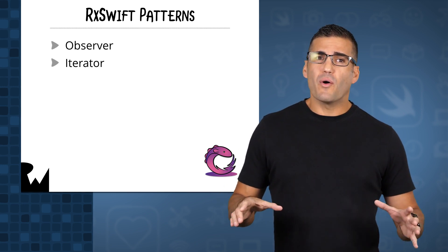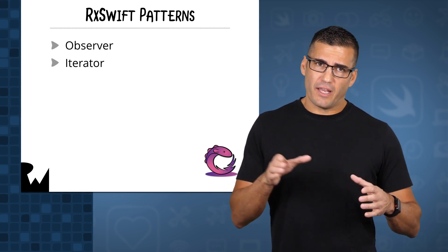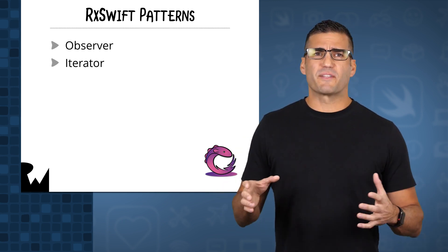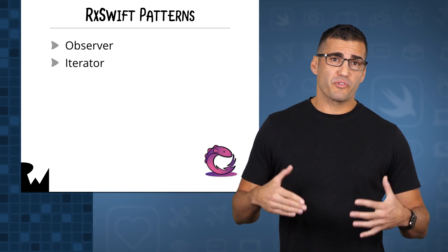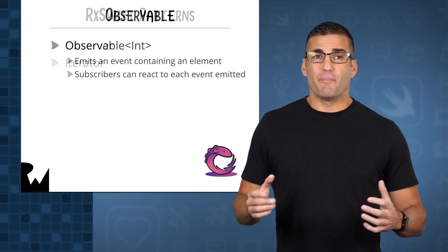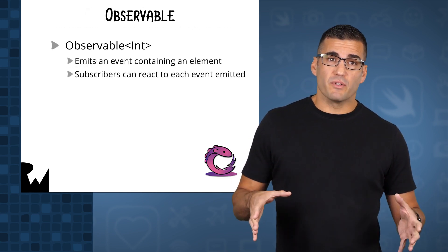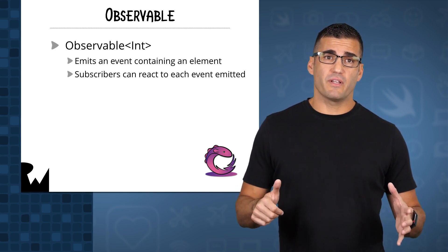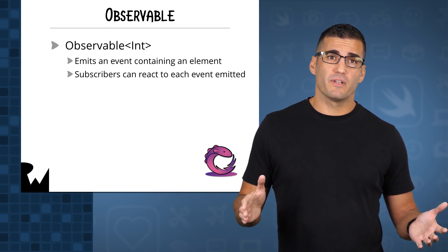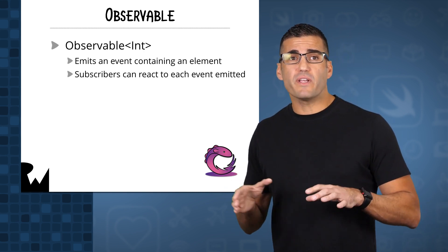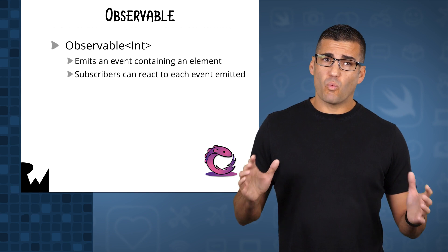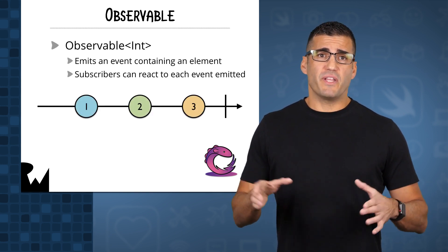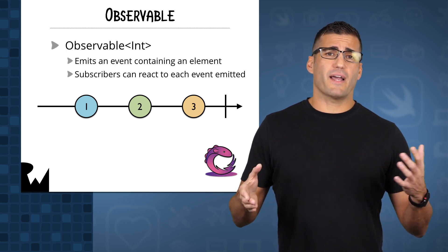You already know about sequences and collections and iterating over them. And you've probably also written your fair share of observable code, like subscribing to Notification Center or using key value coding and observing. The base type in RxSwift is observable. It is a typed sequence that can emit zero or more elements, such as integers, over time to subscribers. Actually, an observable won't emit anything until it has at least one subscriber. Here's a marble diagram of an observable of integers, but these could also be taps or other recognized gestures, too.